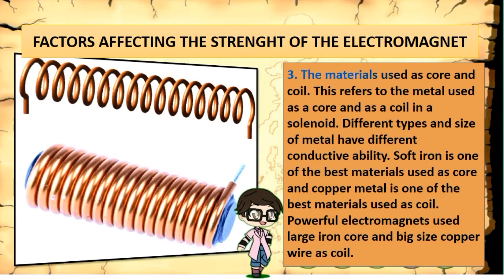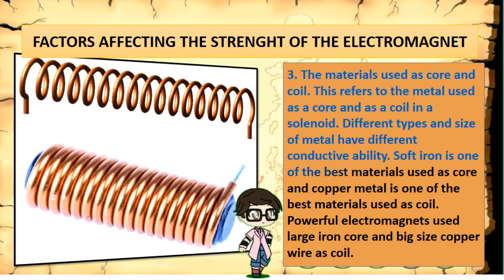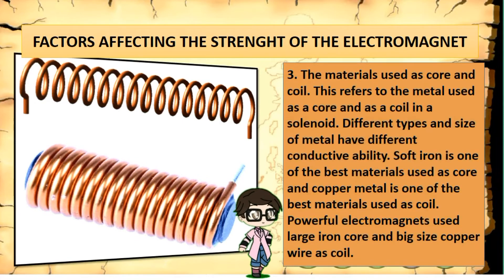The material used as core and coil refers to the metal used as core and as a coil in a solenoid. Different types and sizes of metal have different conductive ability. Soft iron is one of the best materials used as a core, and copper metal is one of the best materials used as a coil. Powerful electromagnets use a large iron core and big size copper wire as coil.